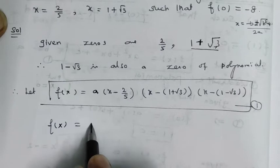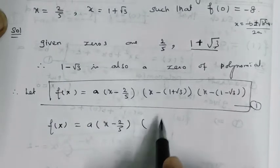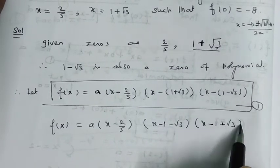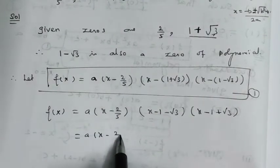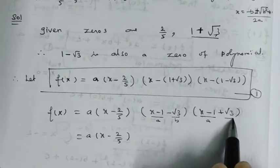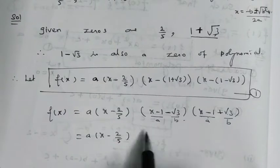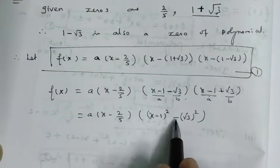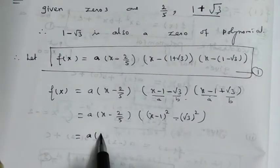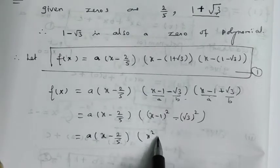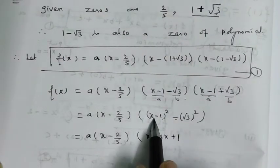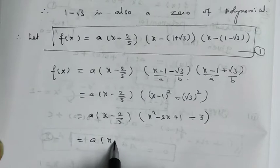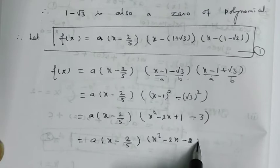So f(x) equals a into (x minus 2/5) times (x minus (1 minus root 3)) times (x minus (1 plus root 3)). Using the identity (a minus b)(a plus b) equals a squared minus b squared, this becomes a into (x minus 2/5) times (x minus 1) squared minus (root 3) squared, which gives a into (x minus 2/5) times (x squared minus 2x plus 1 minus 3), so a into (x minus 2/5)(x squared minus 2x minus 2).